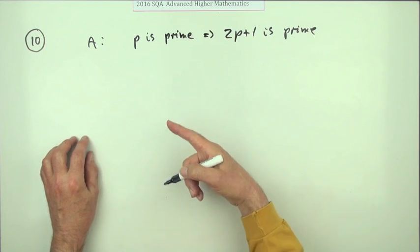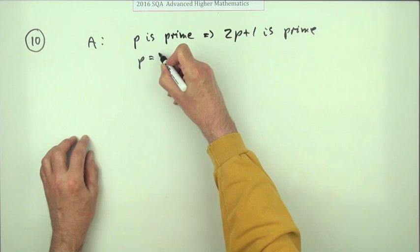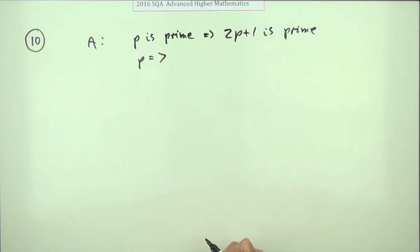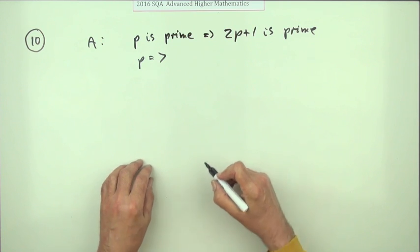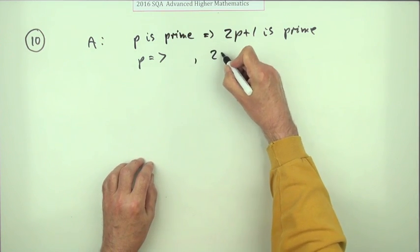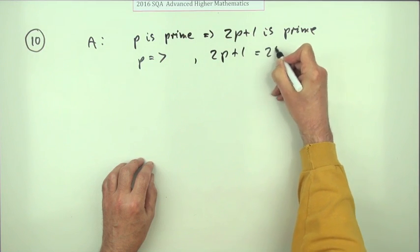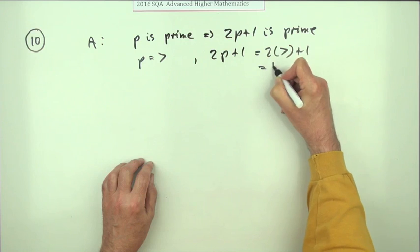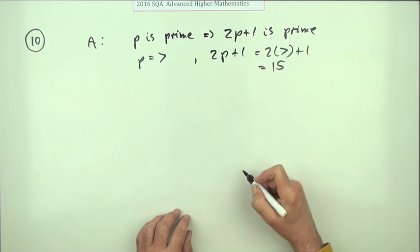Well it's easy to disprove things if you just think of any number that doesn't work. If P is 7, it's certainly a prime number, but 2P plus 1 would equal 2 times 7 plus 1 which is 15, and 15 is not prime.